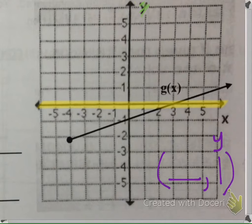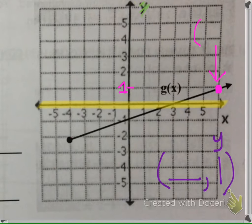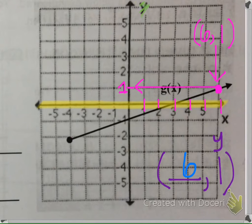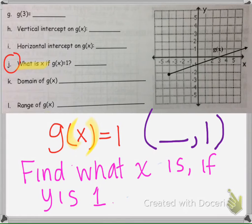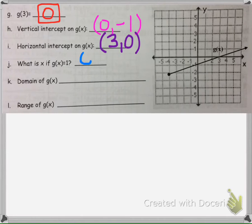Here is where y is 1. If we go across right here to this point, it's going to be 1, 2, 3, 4, 5 — it's going to be (6, 1). So x is 6, the input is 6 when the output is 1. So the answer is 6. If x is 6, the y would be 1, so to answer the question we would put 6.